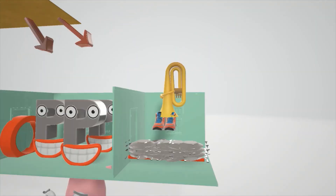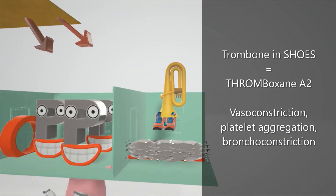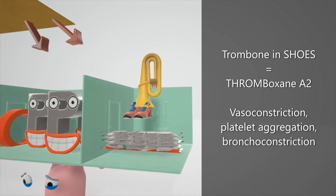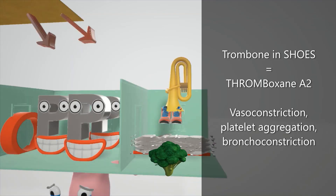Finally, we have a trombone in shoes for thromboxane A2. In this room, the pipe gets very thin to represent vasoconstriction, and there are tons of plates aggregating around the pipe to represent platelet aggregation. We also see broccoli constricting to remind us of bronchoconstriction associated with thromboxane A2.